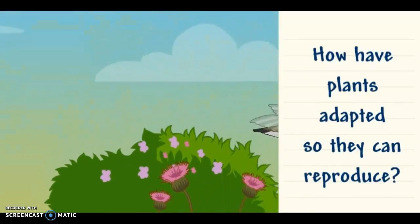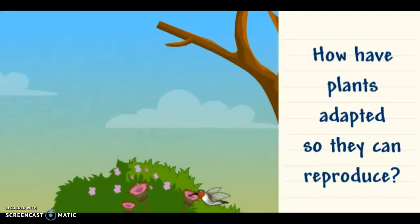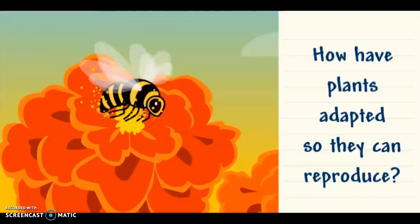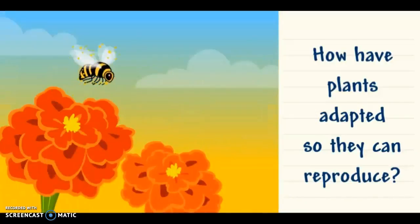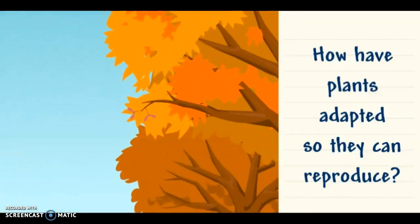To reproduce, many flowering plants must spread their pollen to other plants. Some flowers have bright colors and scents to attract animals that will spread the pollen. Some plants use the wind.